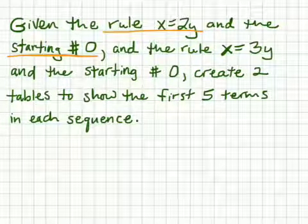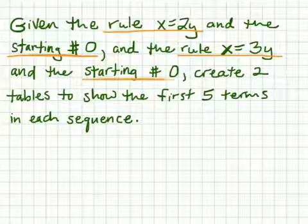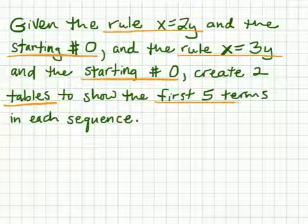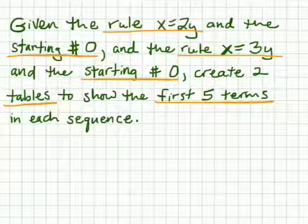And then it looks like we have a whole other rule too: x equals 3y starting number 0. We're going to be making tables and we're going to be showing the first five terms in each sequence.